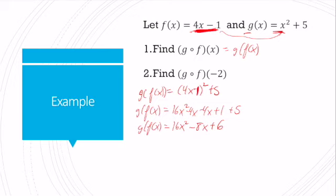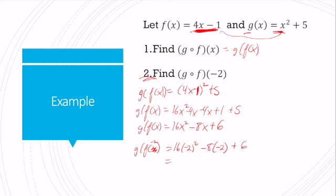Now I need to evaluate this for negative 2. So g of f of negative 2 equals 16 times negative 2 squared, minus 8 times negative 2, plus 6. That gives me 16 times 4 plus 16 plus 6, which equals 64 plus 16 plus 6, for a total of 86.